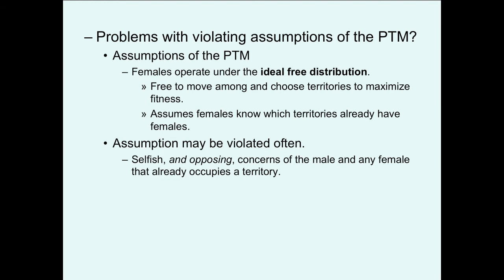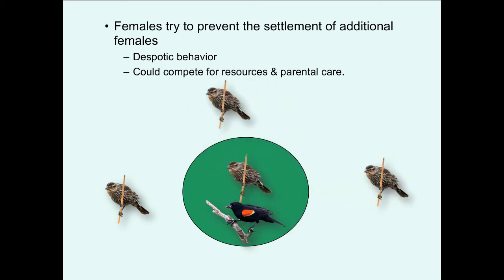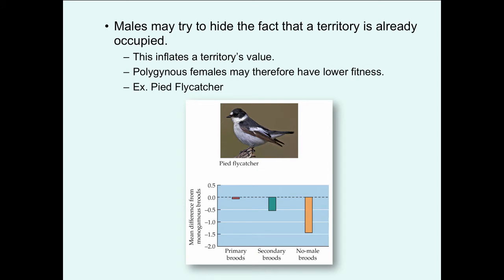The model assumes females operate under the ideal free distribution — free to move among territories and choose what maximizes their fitness — and that females know which territories have females and the variation in resource quality. These assumptions are often violated because of selfish and opposing concerns between what males want versus what's best for females. The first violation is despotic behavior: females try to prevent additional females from settling on their territory, viewing new arrivals as competitors for resources and parental care.